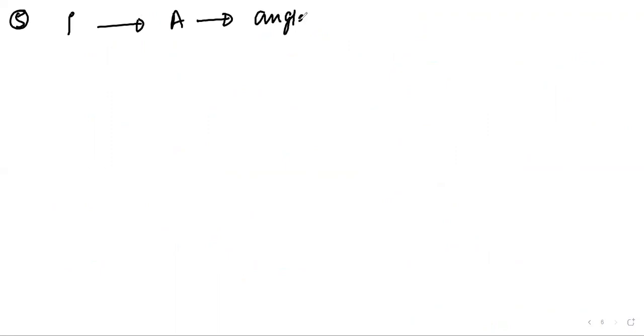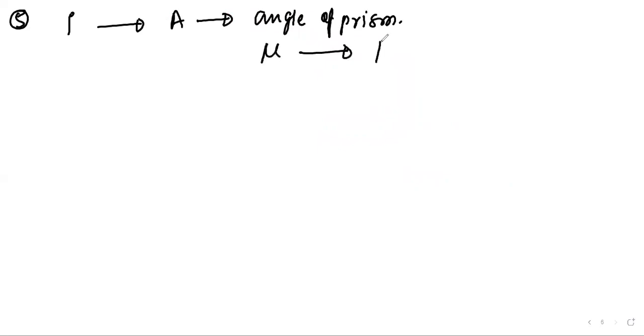Question five: a ray is incident at angle of incidence i on the surface of a small-angle prism with angle A. It emerges normally from the opposite surface. The refractive index of the material is mu. Find the angle of incidence.